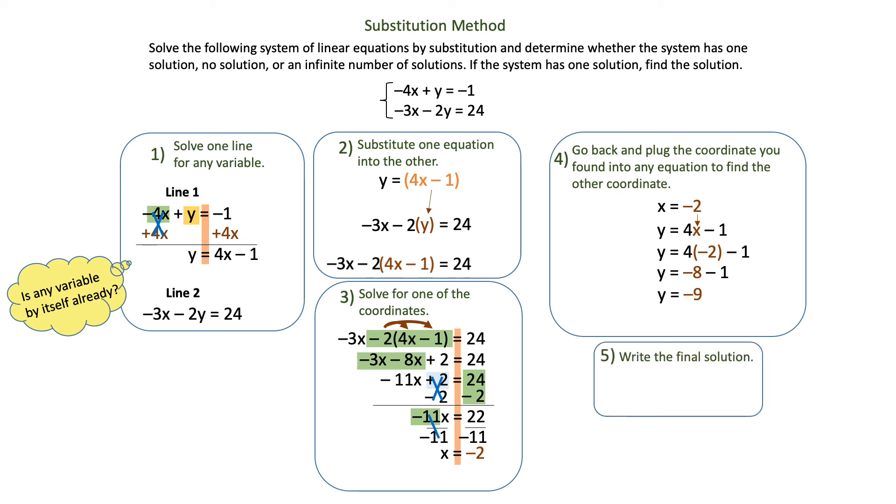The fifth and final thing I need to do is just write my final solution. I have an x coordinate of negative 2 and a y coordinate of negative 9, and I just need to write them as my solution: negative 2, negative 9. That point is where these two lines cross, and so it is the solution to the system.